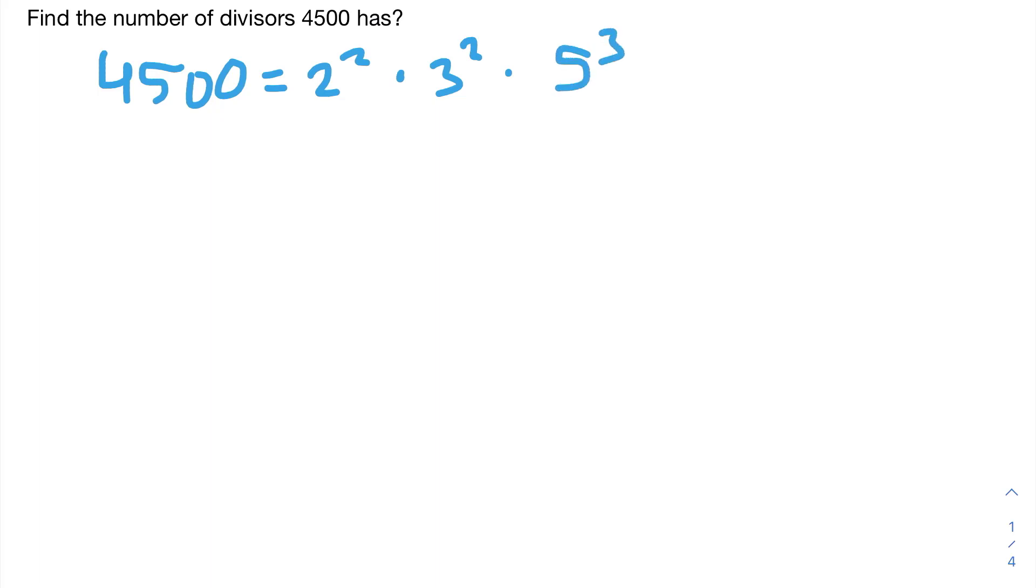Now, what does it mean to be a divisor of 4,500? A divisor, let's just call it D, of 4,500 will divide 4,500 evenly. In other words, 4,500 will be divisible by D if D is a divisor of 4,500.